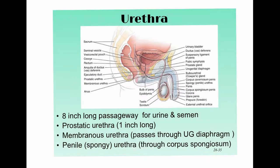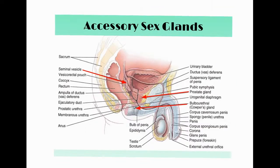The urethra is roughly an eight-inch-long passageway through which both urine and semen travel through the penis. You don't need to know the difference between the corpus spongiosum and corpus cavernosum in detail.